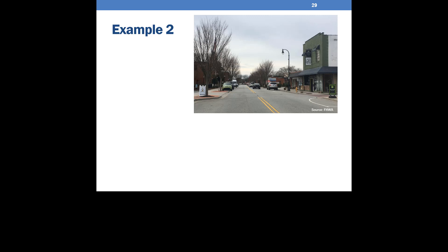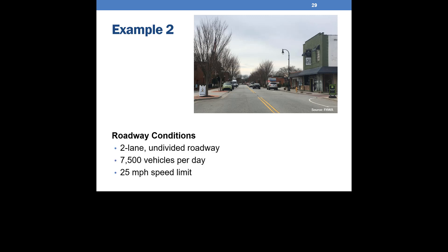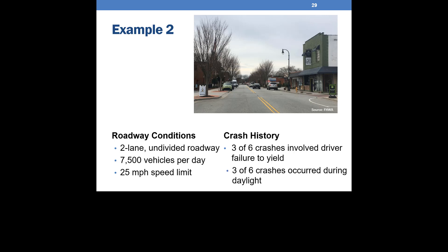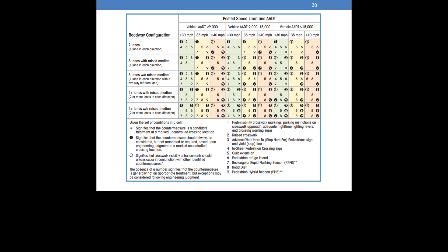For Example 2, we will review both Table 1 and Table 2. Consider the corridor shown. The road is two lanes, undivided, and serves approximately 7,500 vehicles per day. The speed limit on the corridor is 25 mph. Looking at the pedestrian crash history on the corridor, we find that three of six pedestrian crashes involve driver failure to yield, while three of six crashes occur during daylight. Take a moment to remember or write down the details. Using the information provided, find the appropriate cell on the table. Which countermeasures should be considered for an uncontrolled crossing location?